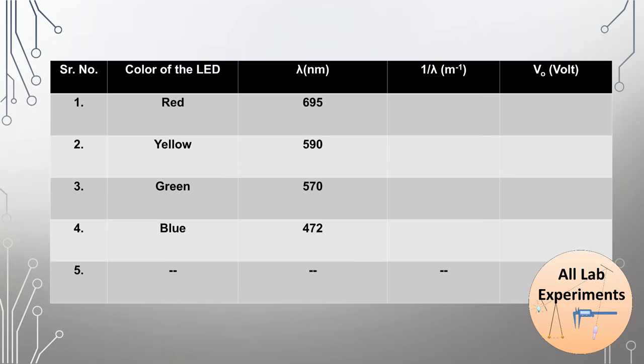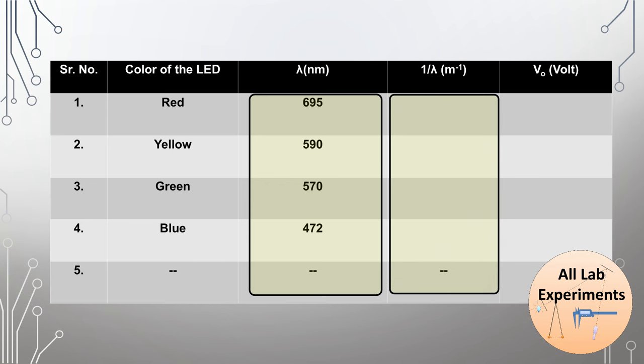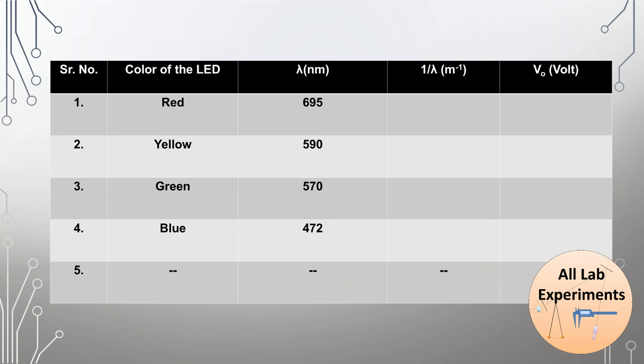The table includes red, yellow, green, and blue LEDs with their wavelengths. We are not finding their wavelengths experimentally; their standard values are given in the LED specifications, so we take those values directly. We calculate the reciprocal of wavelength in units of meter inverse, and in the last column, we write the startup voltage.